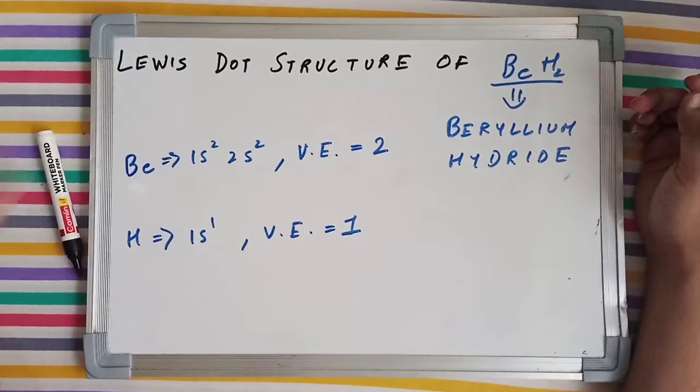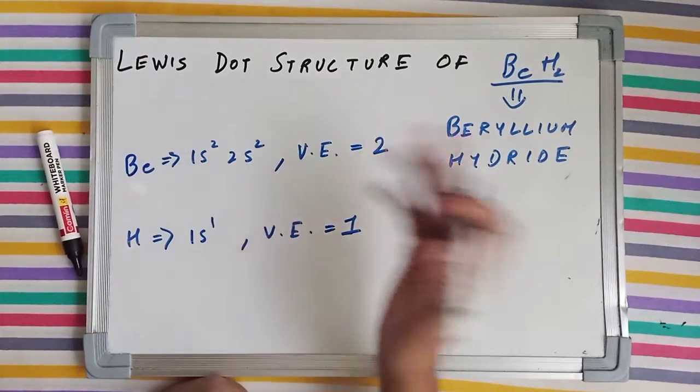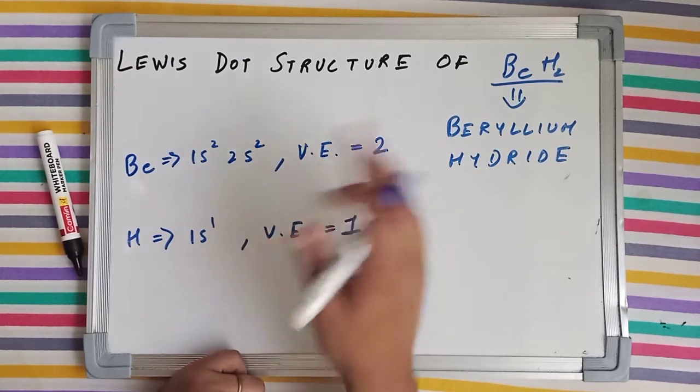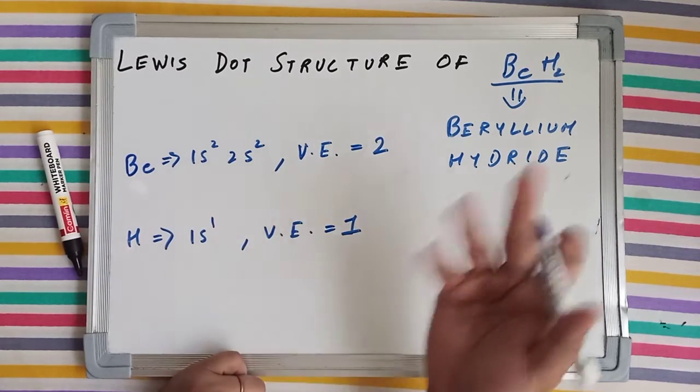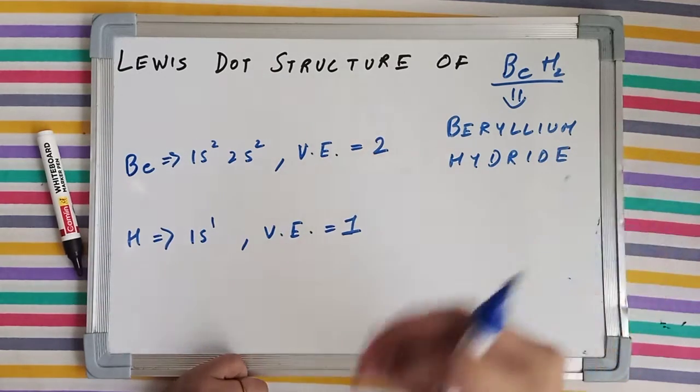The electronic configuration of beryllium is 1s², 2s². Its valence shell is the second shell, the outermost shell. The number of electrons is 2 because valence electrons are those electrons which are present in the outermost shell, the valence shell.